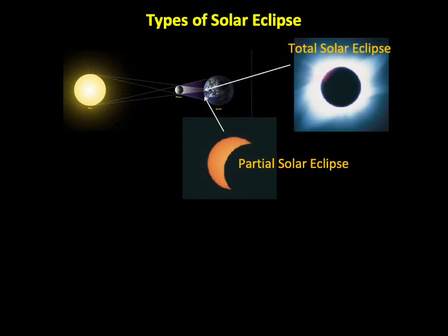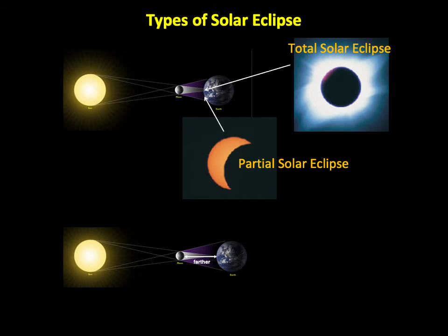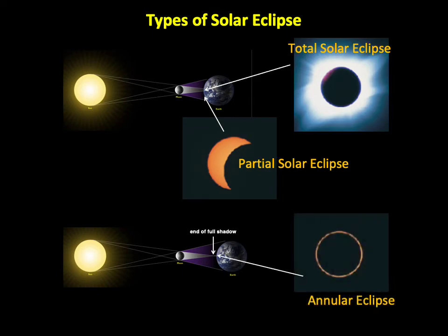The small size of the Moon's shadow can also lead to a third type of solar eclipse. If a solar eclipse occurs at a time when the Moon is relatively far from Earth in its orbit, the full shadow may not even reach Earth. In that case, the Moon will appear too small to fully block the Sun, and the region directly behind the full shadow will have what we call an annular eclipse, in which a ring of sunlight, sometimes called a ring of fire, will remain visible around the Moon.